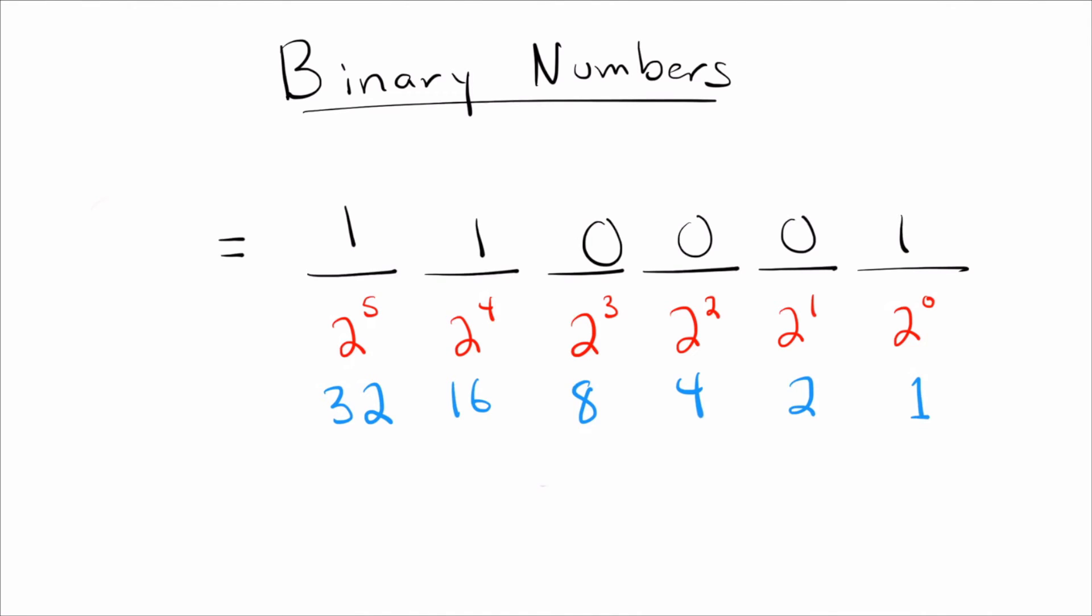Okay, so what is this? So I like to work from left to right, you don't really have to. So this means I have 1 thirty-two. I also have 1 sixteen. No eights, no fours, no twos, but I've got a one. So let's just do that. What is 32 plus 16 plus one? That is 49.